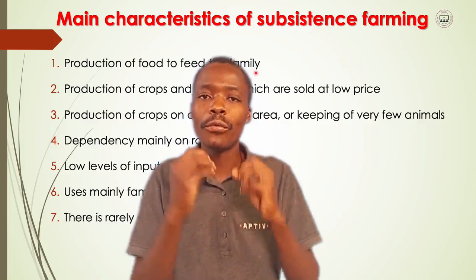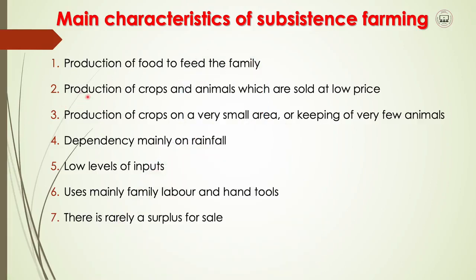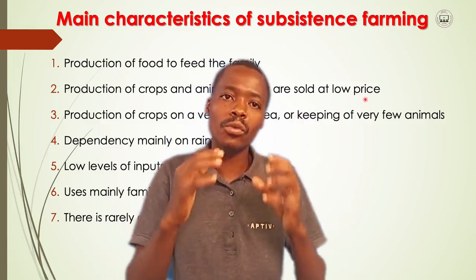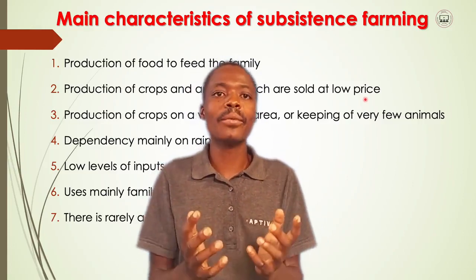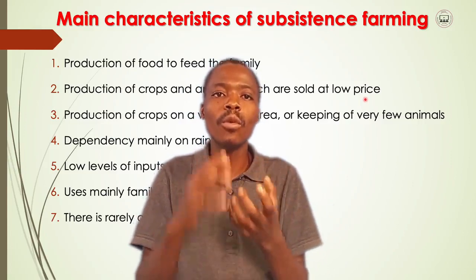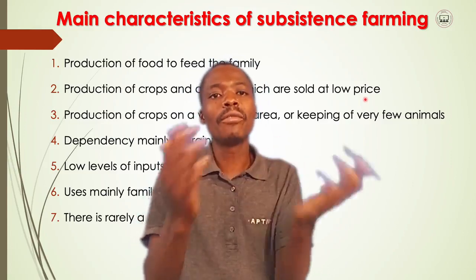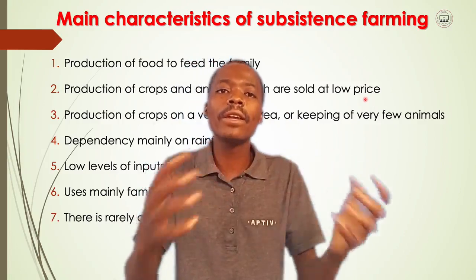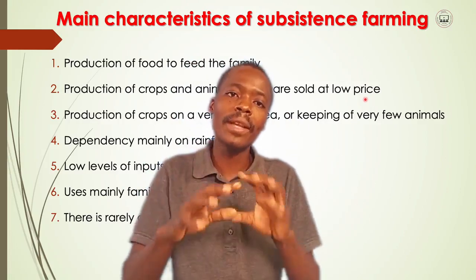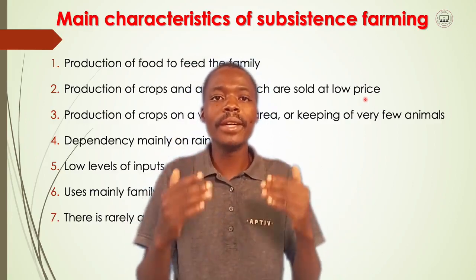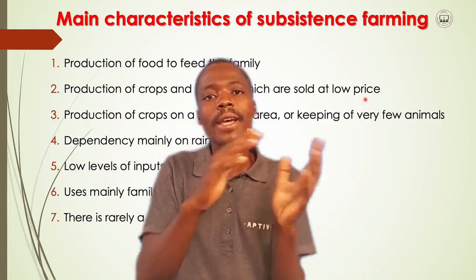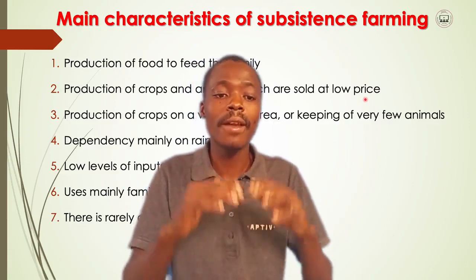Another characteristic is the production of crops and animals which are sold at a low price. For example, chickens in our communities and villages are sold at very low prices. Why? The farmer is just keeping them for food. So if another person comes to buy a chicken, it is given at a very low price, because the aim of keeping that chicken was not for sale — it was for food at family level. So farmers give out at low prices the crops and animals produced under subsistence farming.